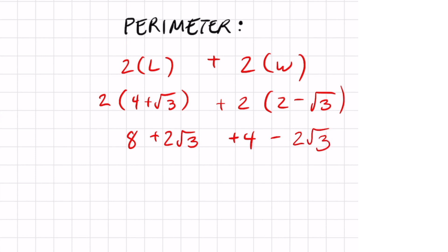And from here combine like terms just like the area. 8 goes with 4 so that's going to be 12. These two are the same square roots so all I got to do is add the numbers in the front. So that's plus 2 minus 2. They end up canceling each other out because plus 2 minus 2 equals 0. The perimeter is 12.